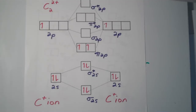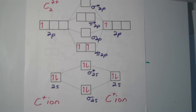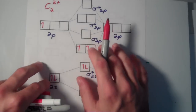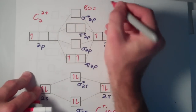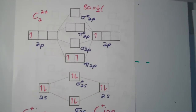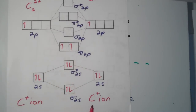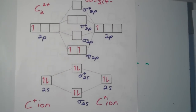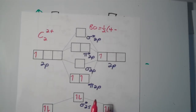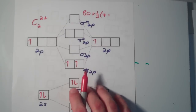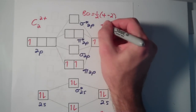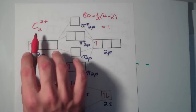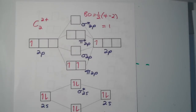So this is the complete molecular orbital diagram for the C2²⁺ ion. The bond order is one-half times the number of bonding electrons minus antibonding electrons. We have four electrons in bonding MOs, and the sigma* 2s has two electrons in antibonding MOs, so the bond order is one-half of (4 minus 2), which equals 1. Based on this, the C2²⁺ ion should be relatively stable.